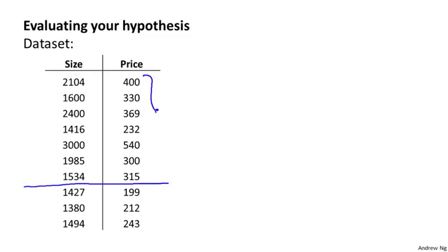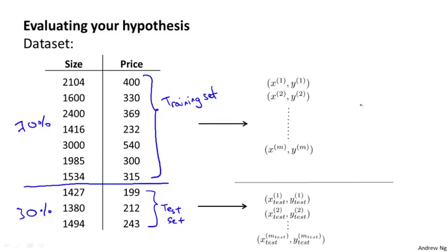The first portion is going to be our usual training set. And the second portion is going to be our test set. And a pretty typical split of all the data we have into a training set and test set might be around, say, a 70%, 30% split, with more of the data going to the training set and relatively less to the test set.